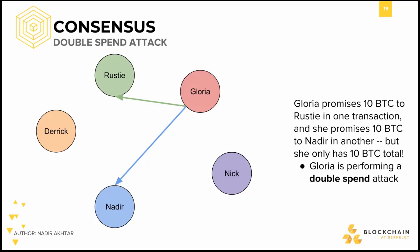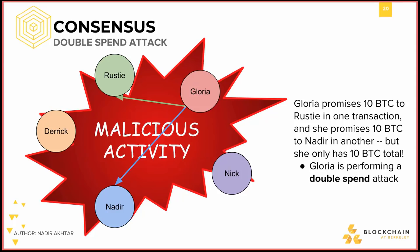This is what's known as a double spend attack. Gloria is spending only 10 bitcoins to get 20 bitcoins worth of goods. In this naive version of consensus, this is legal. With her transaction to me, Gloria tells me to update my copy of the ledger, and with her transaction to Nadir, she tells Nadir to update his copy of the ledger. Both Nadir and I see that the transaction is valid and each believe that we have received the bitcoins. Of course, both Nadir and I can't own the same bitcoins. The moment we try to redeem these tokens with the network, the issue becomes transparent. It's going to look to Derek and Nick that these transactions never happened.